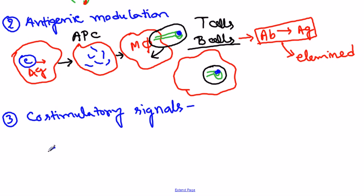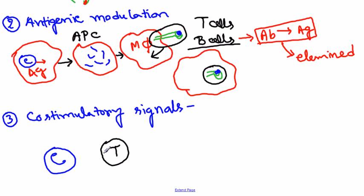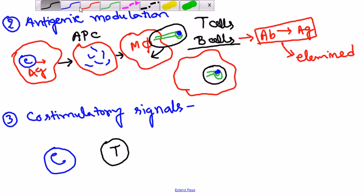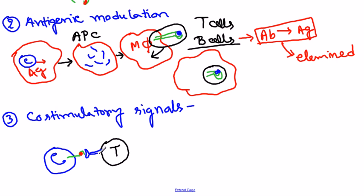Looking at the interaction between a cancer cell and a T cell: the cancer cell has MHC class 1 molecules on its surface, though expression is decreased — only a very few MHC molecules are present. These MHC molecules hold peptide sequences. On the T cell there are T cell receptors, or TCRs, which detect the presented antigen. However, this TCR-MHC interaction alone, though it is the major interaction, is not enough to provide the T cell with a killing signal.